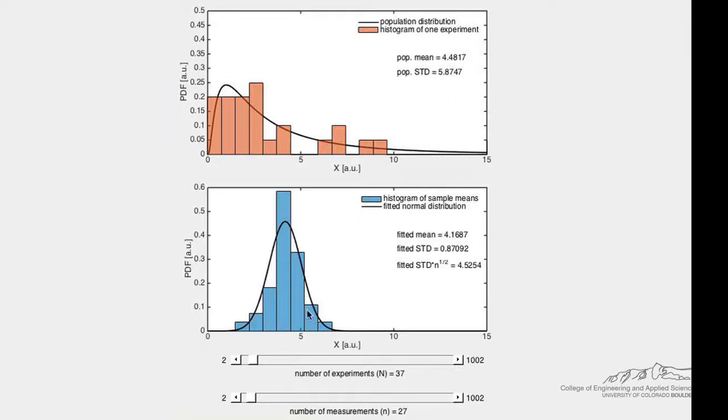Let's fit a normal distribution to these sample means and display the fitted mean and the fitted standard deviation. We can now compare the fitted mean to the population mean and the fitted standard deviation times the square root of n to the population standard deviation.